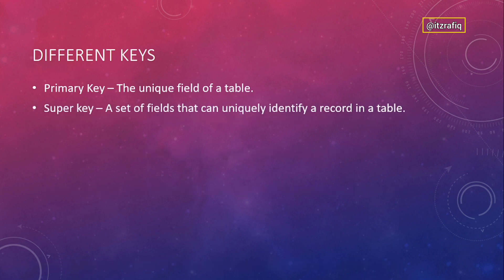A Super Key is a set of fields that can uniquely identify a record in a table. For example, in a student table, both the admission number and the mobile number are unique — each student has a different phone number and a different admission number — so both can be used as a primary key. These are known as super keys, used to make records more unique in a table.